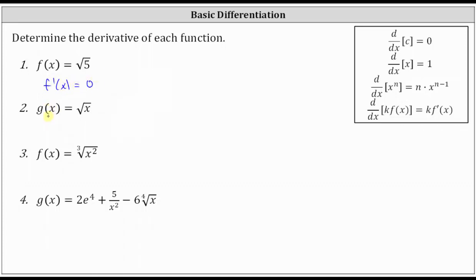Next, we have g of x equals the square root of x. To find the derivative, we'll have to write the square root of x using a rational exponent. Remember, in general, if we have the nth root of a to the m, as a rational exponent, this would be a to the power of m divided by n. So as a rational exponent, we have the exponent m divided by the index n.